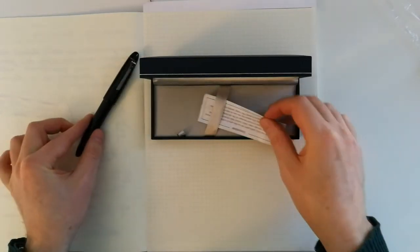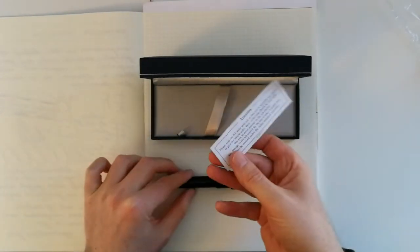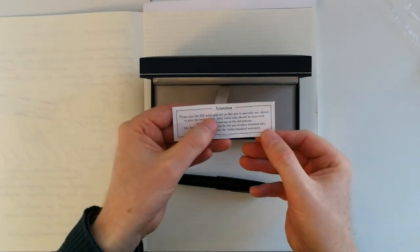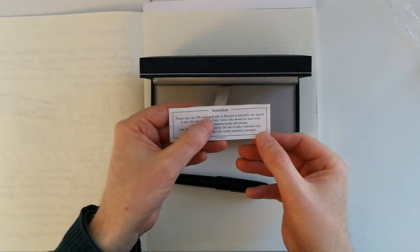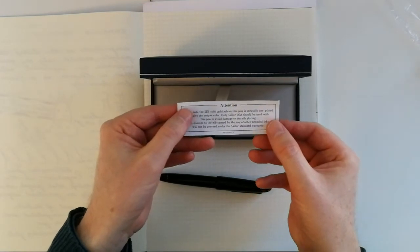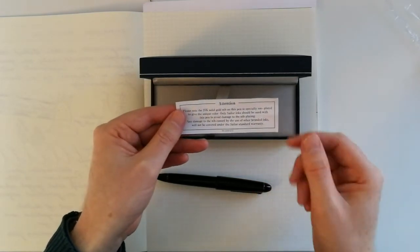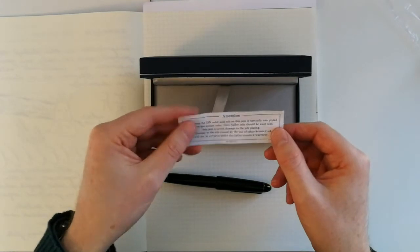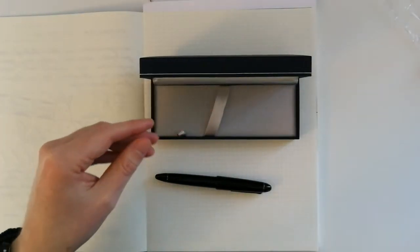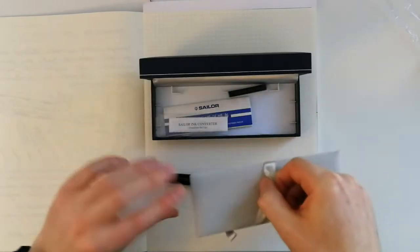So in the box you get a little note. This is just saying that the gold nib, 21 karat gold solid gold nib, is iron plated to give the black color and you should be careful what ink that you use so you don't destroy the color of the plating of the nib.